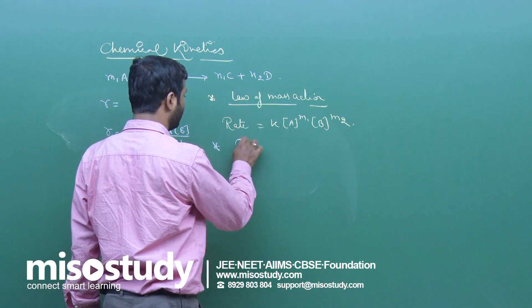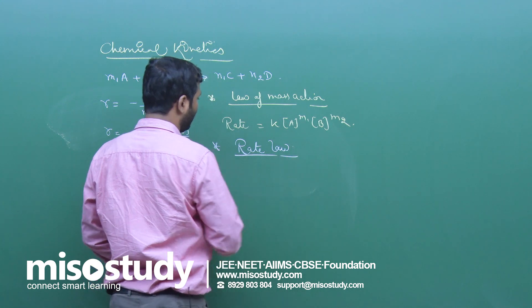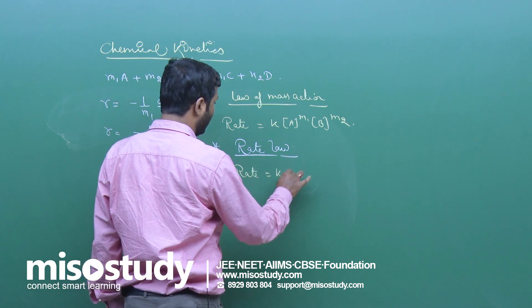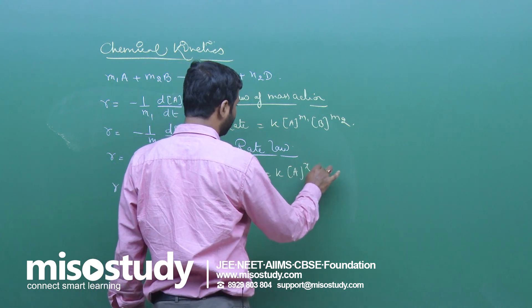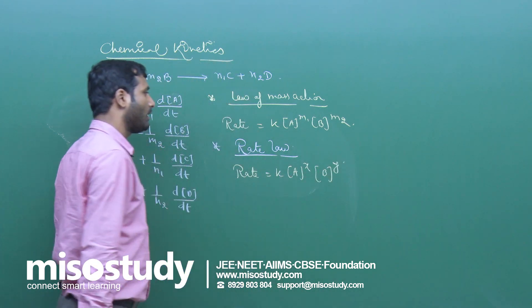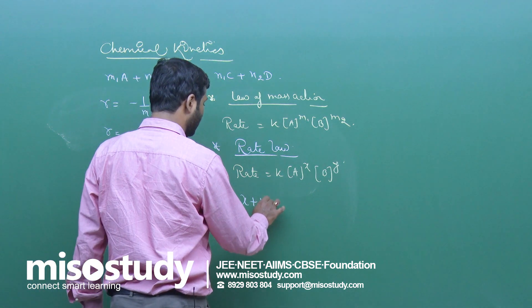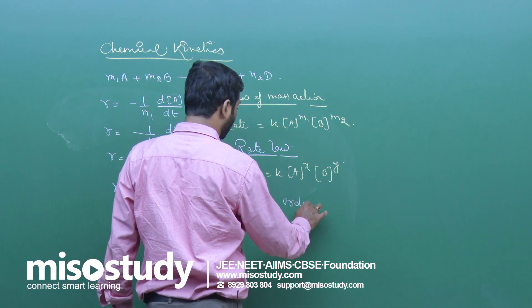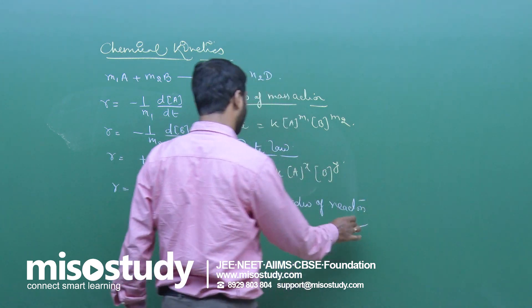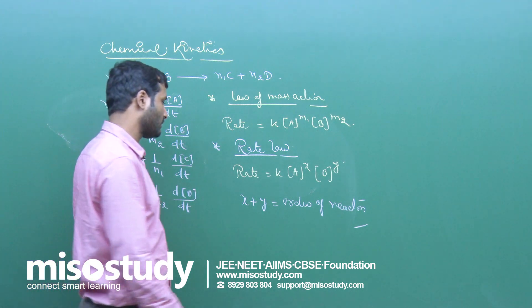But this is not completely true. The rate law says that rate = k[A]^x × [B]^y, where x and y depend upon experimental values, not the stoichiometric coefficients. Here, x + y governs the order of reaction, and the order may be positive, negative, or fractional.